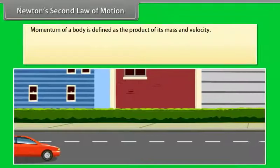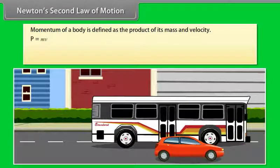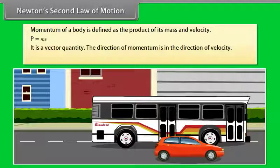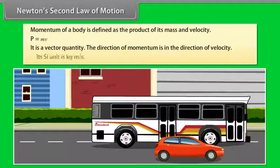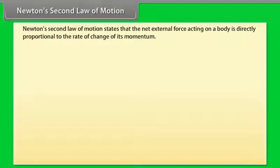First, we will talk about momentum. Momentum of a body is defined as the product of its mass and velocity: P is equal to M into V. It is a vector quantity. The direction of momentum is in the direction of velocity. Its SI unit is kilogram meter per second. Newton's second law of motion states that the net external force acting on a body is directly proportional to the rate of change of its momentum.